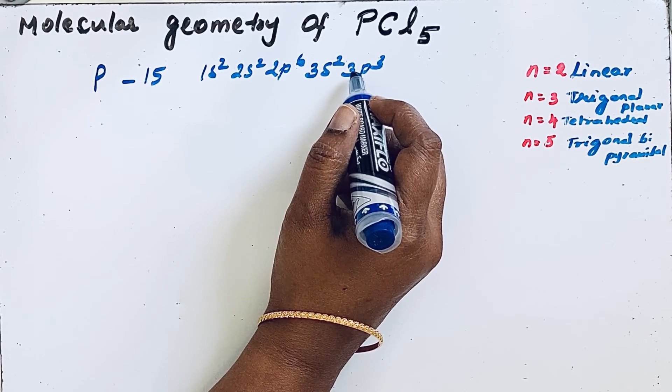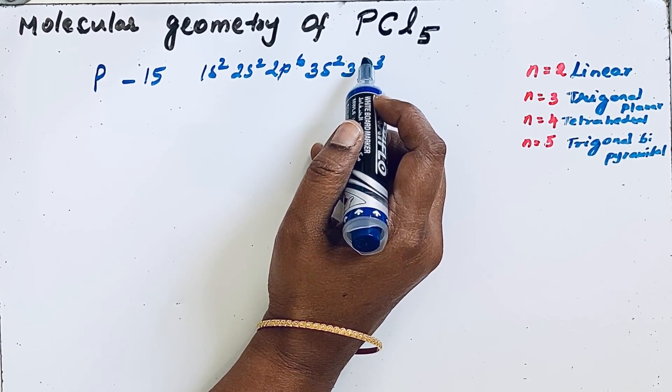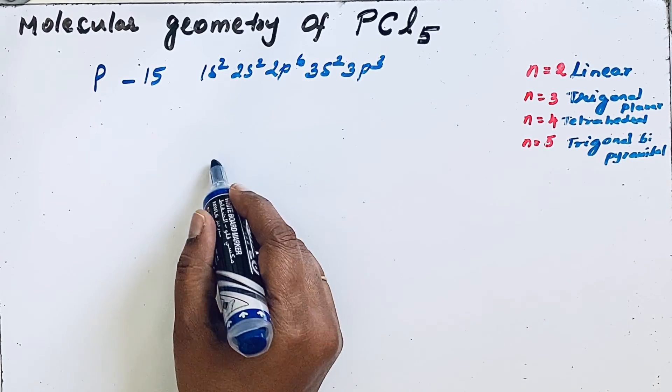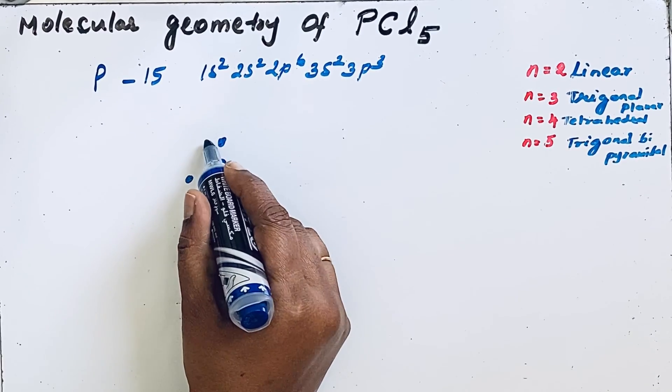These five electrons make bonds with five chlorine atoms in the PCl5 molecule. Let us show this in the Lewis dot structure for phosphorus with its five valence electrons.